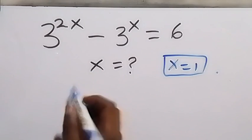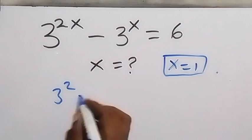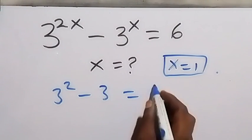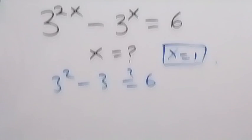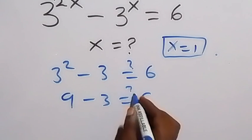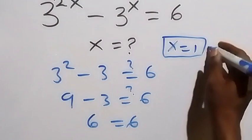Then from here, 3 squared is 3 times 3, which is 9, then minus 3 equals 6. When we subtract, we have 6 on this side, which equals 6 on the other side. Then we can conclude that x equals 1 is the solution to this problem.